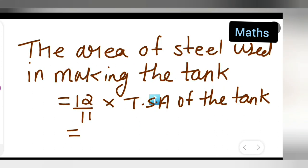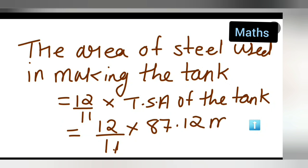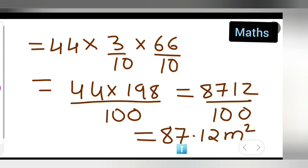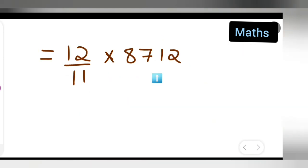So the actual area of steel used = (12/11) × total surface area of the tank. The total surface area was 87.12 square meters, so we write: (12/11) × 87.12. Removing the decimal: 12/11 × 8712/100.